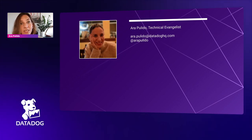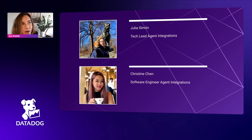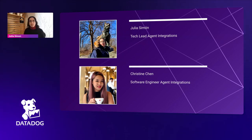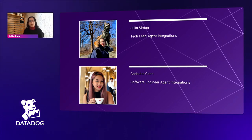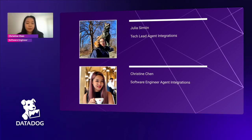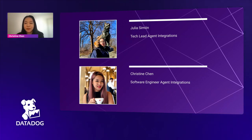The important people today who we've invited are Julia and Christine. Julia, do you want to introduce yourself? My name is Julia. I'm a software engineer and the team lead for agent integrations. We are a distributed team and I work remotely from Spain. And Christine? I'm Christine, a software engineer on the agent integrations team, based in the New York City office.